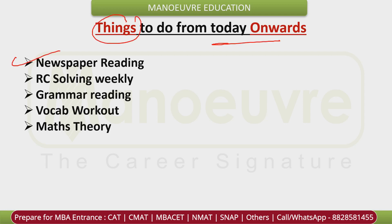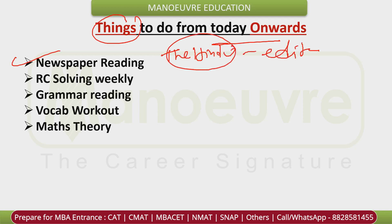Things to start from today: first, newspaper reading. Read The Hindu every day, especially the editorial. This will improve your English level significantly.